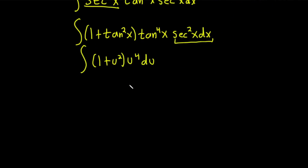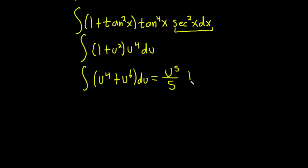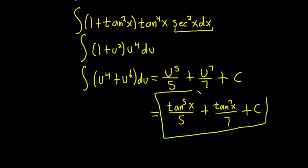Just like before, we distribute the u to the fourth: u to the fourth plus u to the sixth, du. We integrate using the power rule — add one and divide — giving u to the five over five, plus u to the seven over seven, plus c. Since u was tan x, this equals tangent to the fifth of x over five, plus tangent to the seventh of x over seven, plus c. That's the final answer.